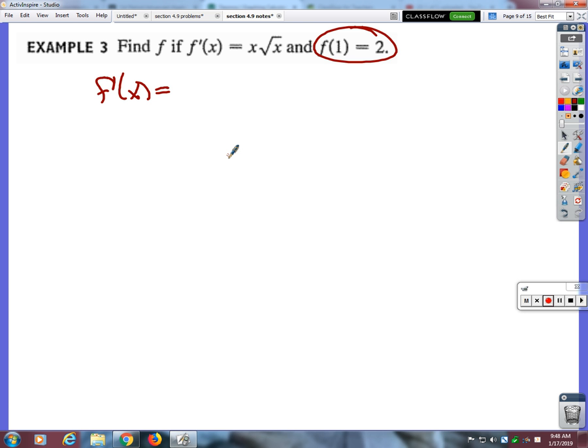X times the square root of x can be rewritten as what? X to the three halves, because yeah, the square root of x is x to the one half, and then we already had x to the first, so one plus three halves is, I mean one plus one half is three halves, right? Okay. Will you add the exponents? Yeah, when you're multiplying. Okay, so now we can figure out what the original function is just like we've been doing before.